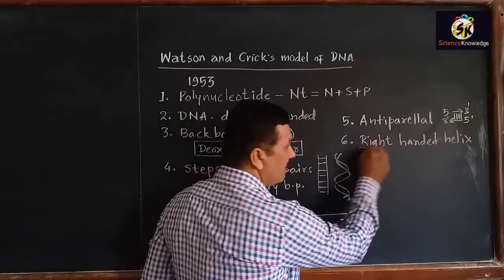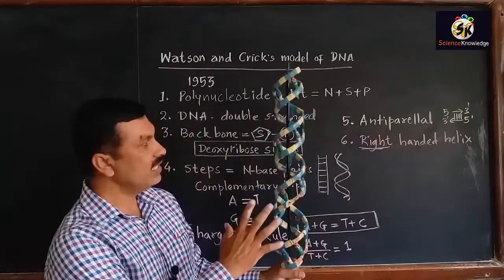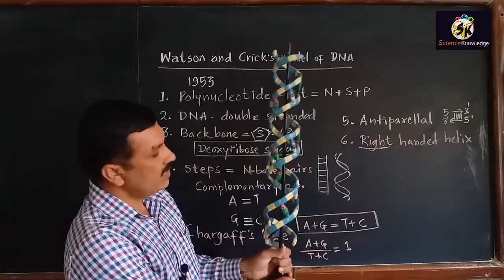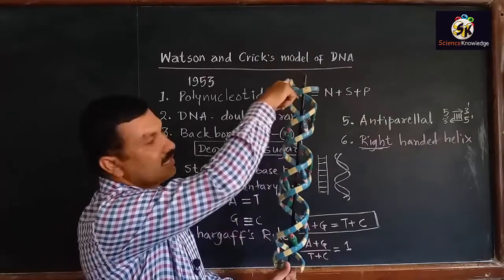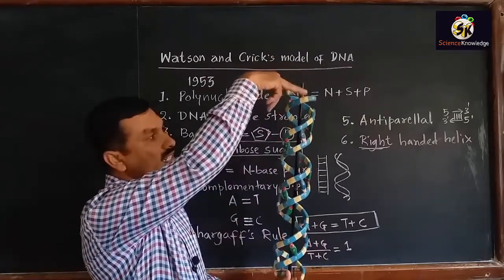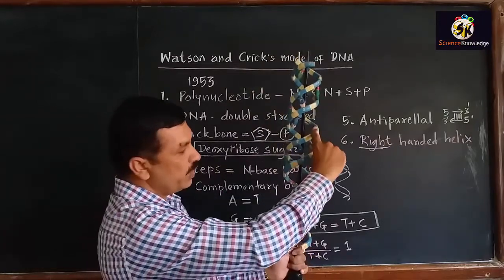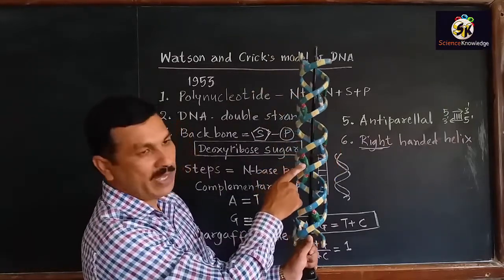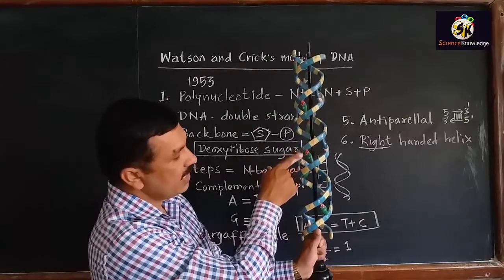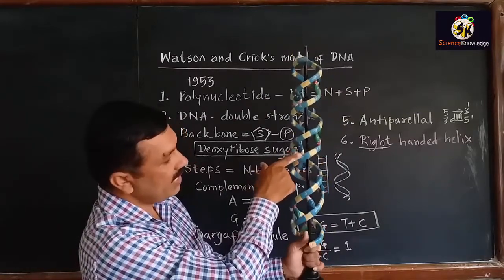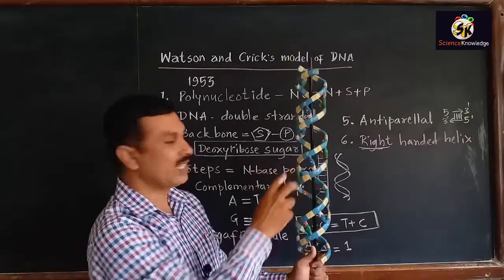Now, why is it called a right-handed helix? Here we can see there are two strands, and these two strands are twisted around each other. The backbone is made up of sugar and phosphate, and the base pairing is between C and G. Similarly, here A and T - there is complementary base pairing.